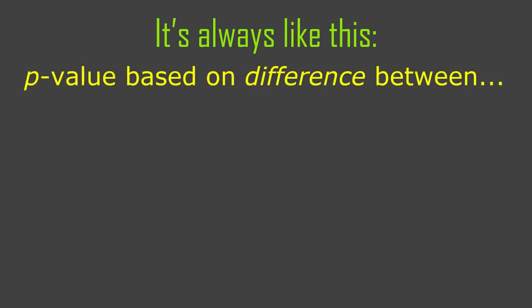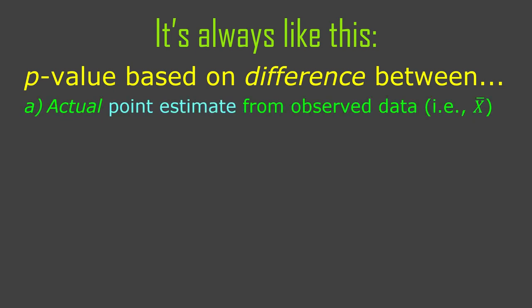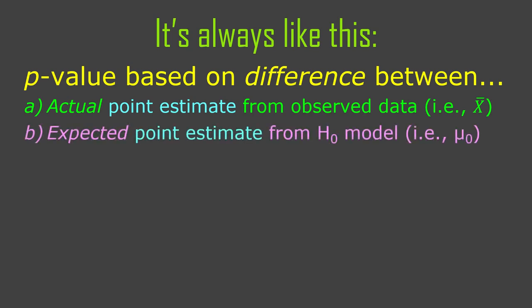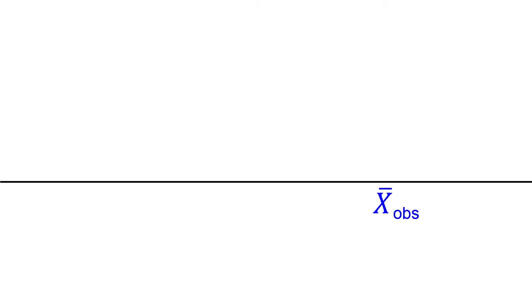P-values are always based on a difference between an actual point estimate from observed data — a sample mean, x-bar — and the expected point estimate from the null hypothesis model, mu zero, the mean of all possible means if the null hypothesis were true. The mean of all possible anything is the expected value. We standardize that difference and turn it into essentially a z-score — explicitly a z-score for now, and later things that are kind of like z-scores, tweaked a bit. We just compare these two things and standardize the difference into numbers of standard errors.